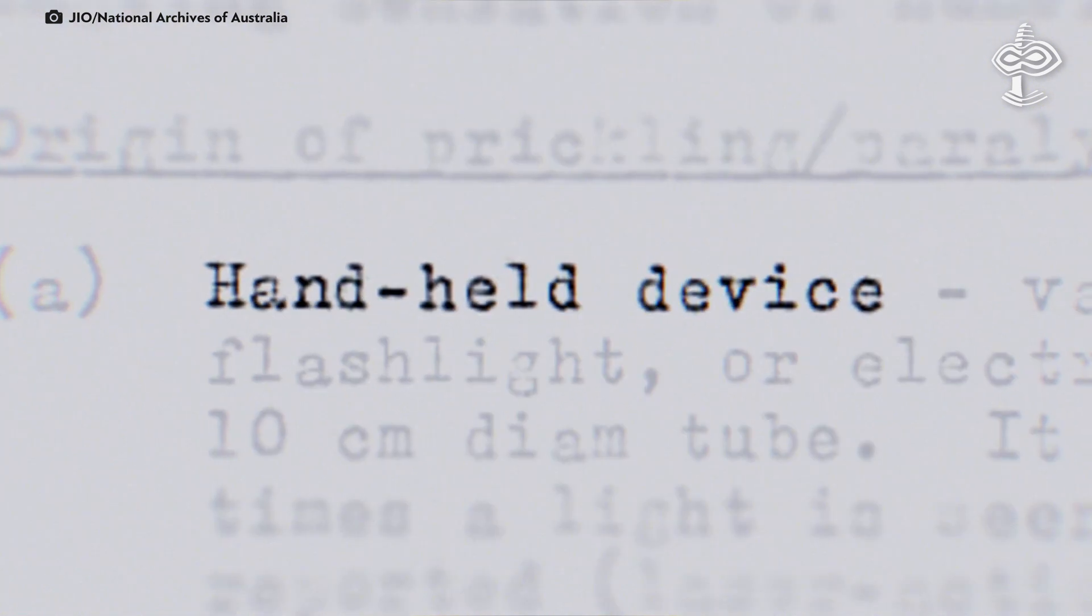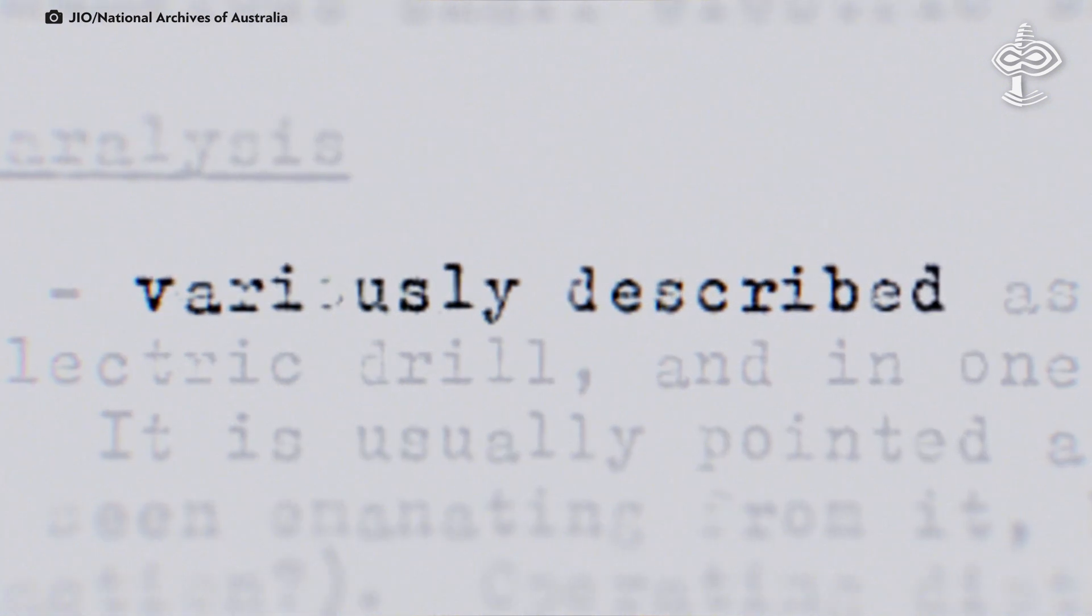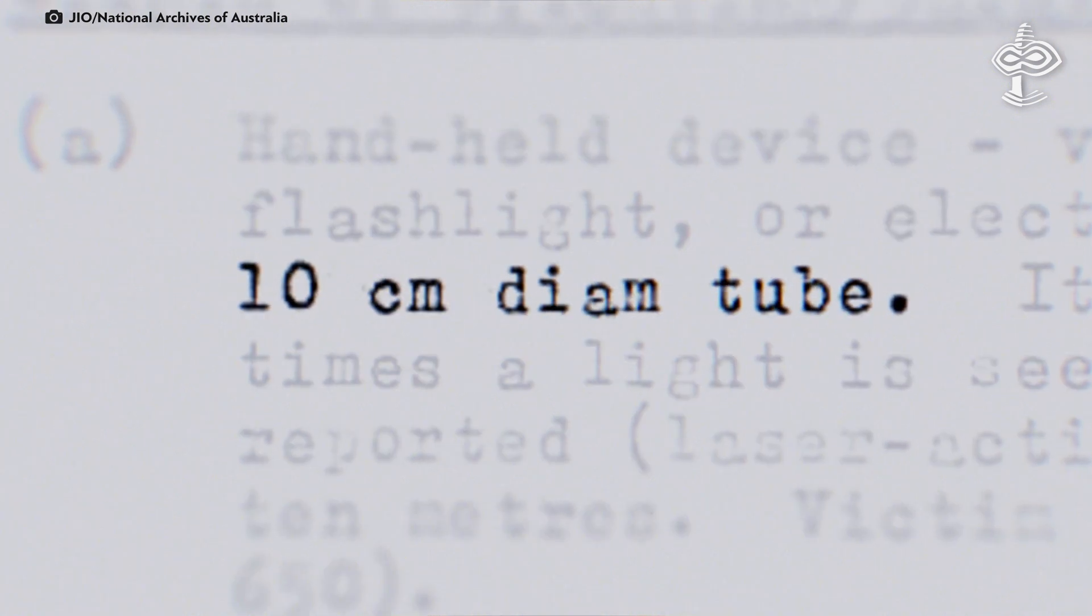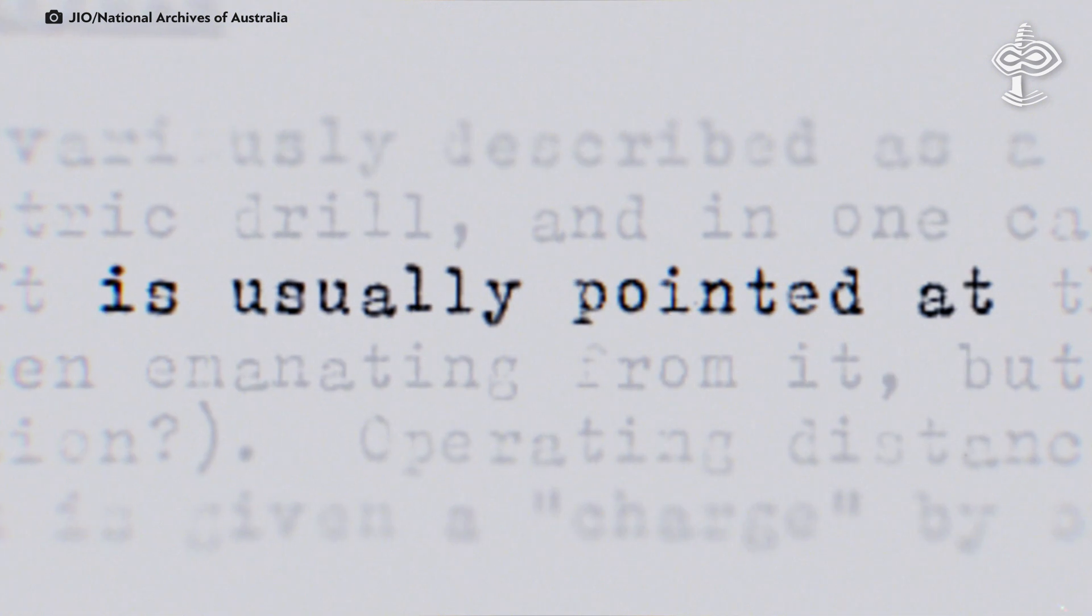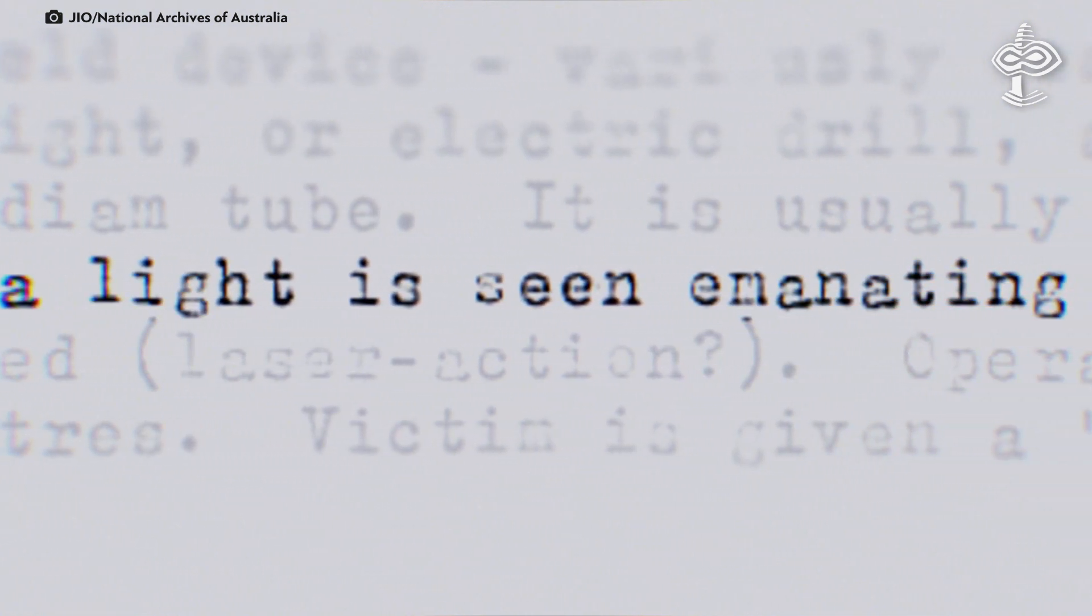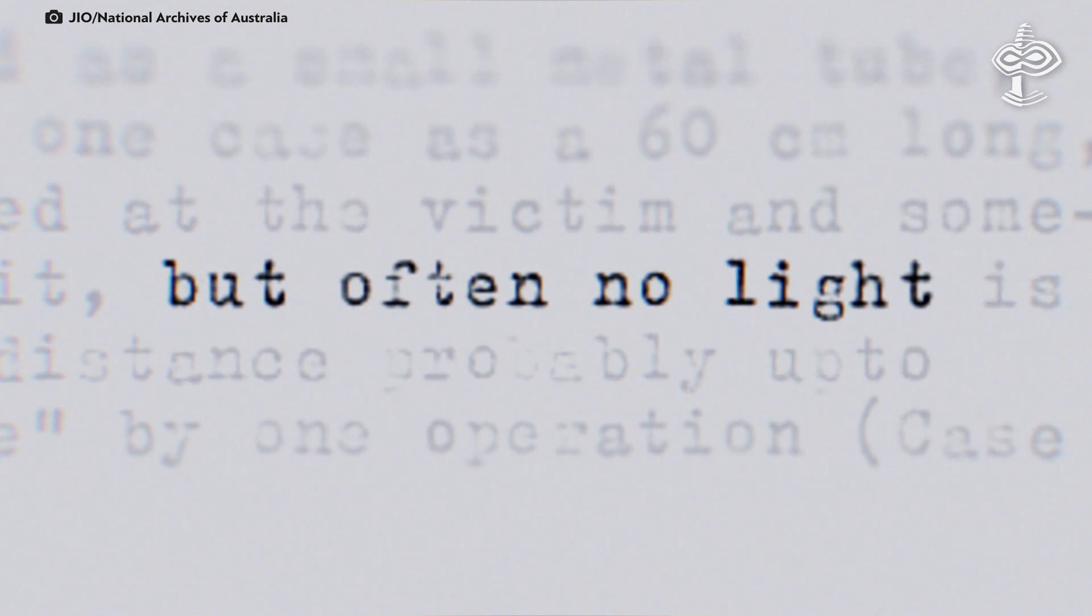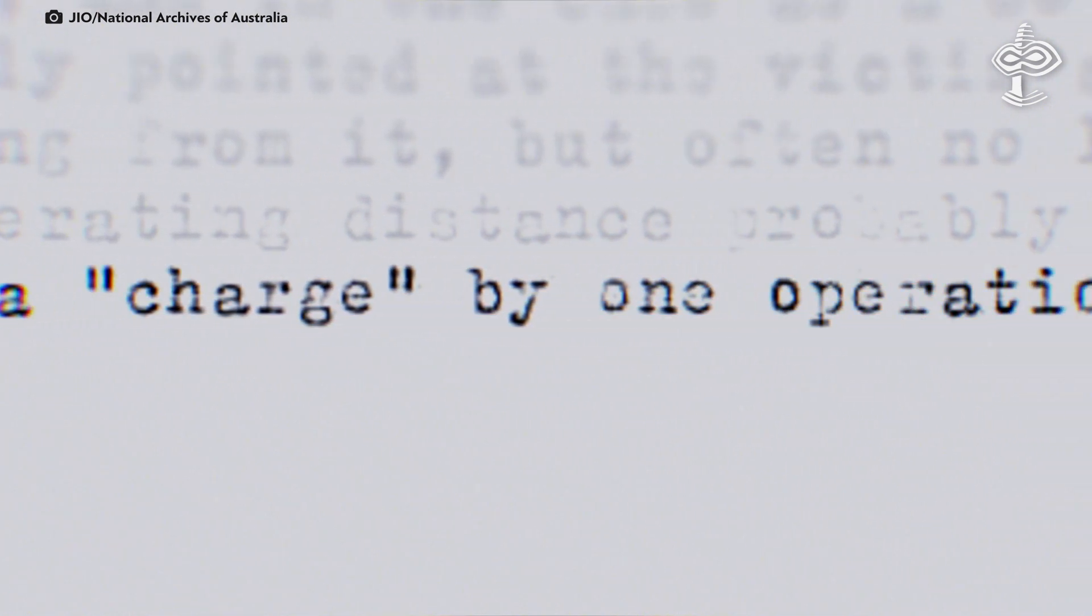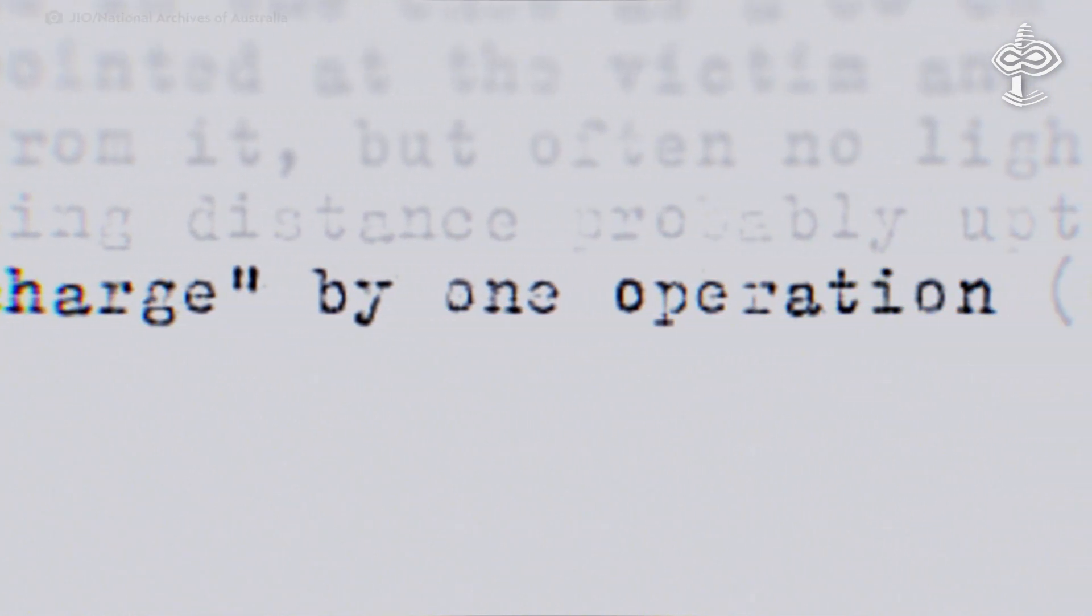Quote: such a handheld device, variously described as a small metal tube or flashlight, and in one case as a 60-centimeter long, 10-centimeter diameter tube. It is usually pointed at the victim, and sometimes a light is seen emanating from it, but often no light is reported. Operating distance, probably up to 10 meters. Victim is given a charge by one operation. End of quote. Is the level that the anomalous phenomena come into contact with human hardware bioplasmatic and bioelectric then?